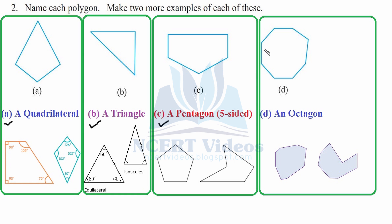For part D, counting one through eight sides, this is an octagon. We can draw another octagon with eight sides to further demonstrate it, counting two through eight sides.